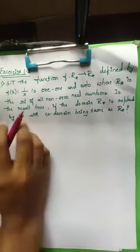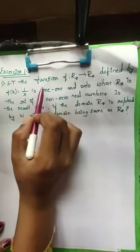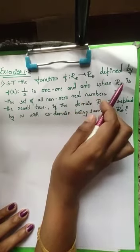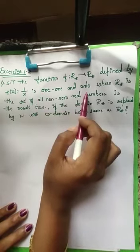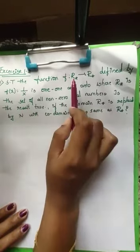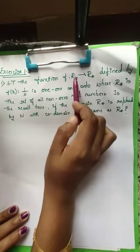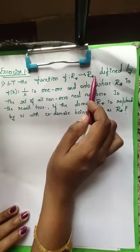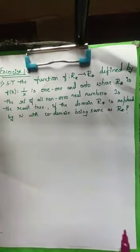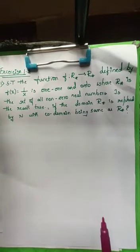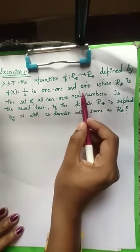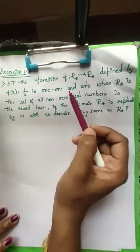Today we will discuss problems under Exercise 1.2. The problem says: show that the function f from R* to R* defined by f(x) = 1/x is one-one and onto. So we have to show that f(x) = 1/x is one-one and onto, where the domain is R* and the co-domain is also R*. R* is the set of all non-zero real numbers — real numbers excluding zero.